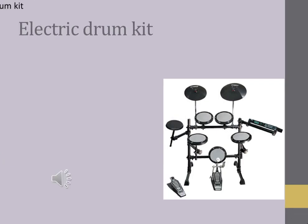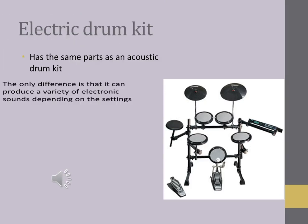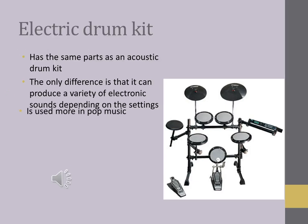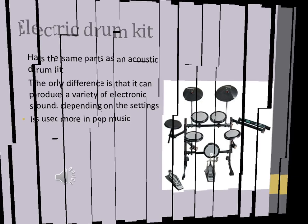The electric drum kit has the same parts as an acoustic drum kit. The only difference is that it can produce a variety of electronic sounds depending on the settings. Here's an example of what it sounds like. It is used more in pop music.